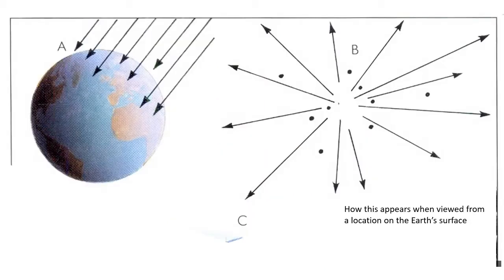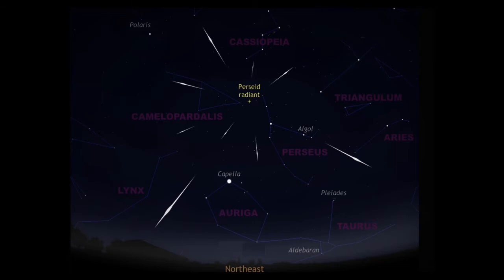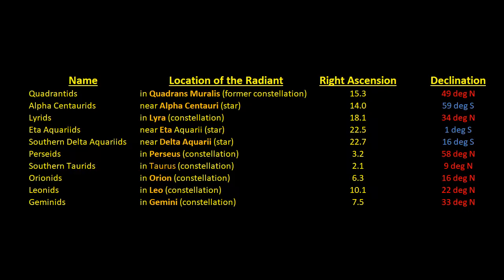Meteoroids enter the Earth's atmosphere in parallel paths. When this is projected onto the two-dimensional dome of the sky, they all appear to radiate from a particular point — this is the radiant. It's a bit like looking along a long straight road where the road, trees running parallel to it, and power cables all appear to converge at a point in the distance. The radiant of the Perseids lies in the constellation Perseus, and in general meteor showers are named after the constellation the radiant is located in, or a nearby bright star.